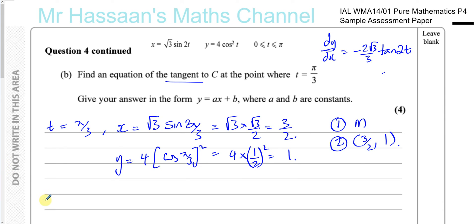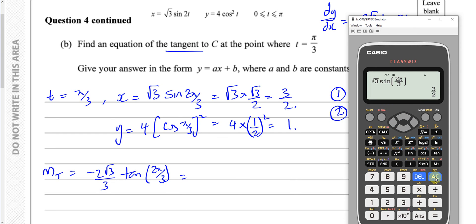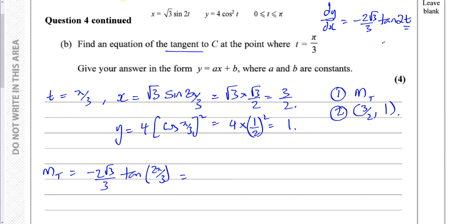Now we find the gradient of the tangent by substituting t equals pi over 3 into the gradient function. That gives minus 2 root 3 over 3 times tan of 2pi over 3. The tangent of 2pi over 3 equals negative root 3, so we get negative root 3 times minus 2 root 3 over 3, which gives 2. So the gradient of the tangent is 2.